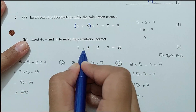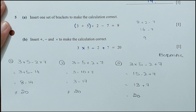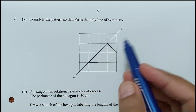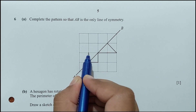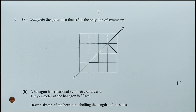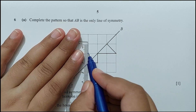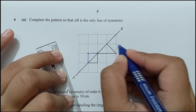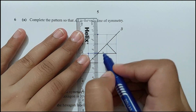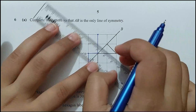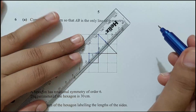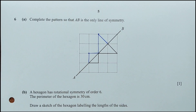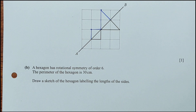Question 6 part A: complete the pattern so that AB is the only line of symmetry. Completing the pattern means both sides of AB are identical mirror images of each other. For part B: a hexagon has rotational symmetry of order 6, meaning it has 6 sides.